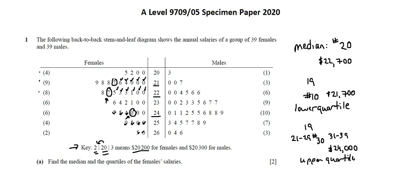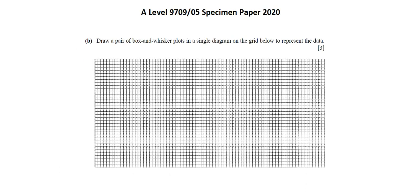This completes requirements for part A. Let's move on to part B. Part B reads, draw a pair of box and whisker plots in a single diagram on the grid below to represent the data. I'm going to start with the scale. I can see that the range of salaries in the top row of 20,000 plus. The low end is 20,000. There's a low end for female of 20,000.